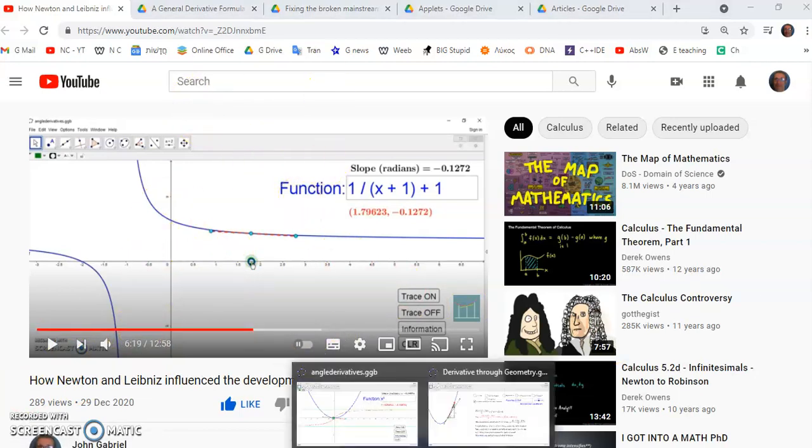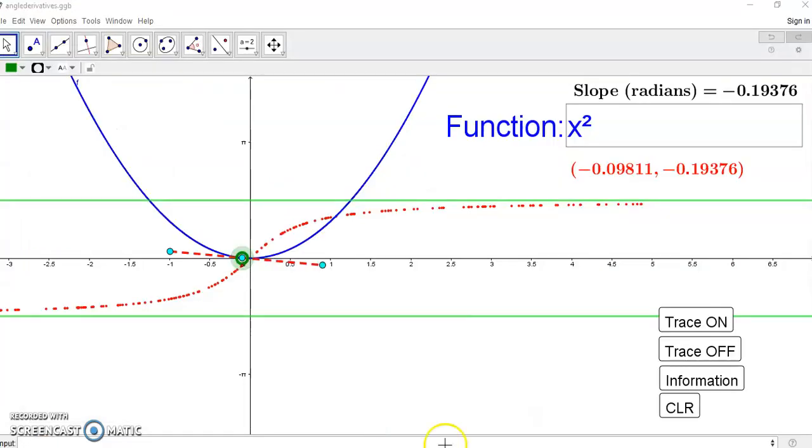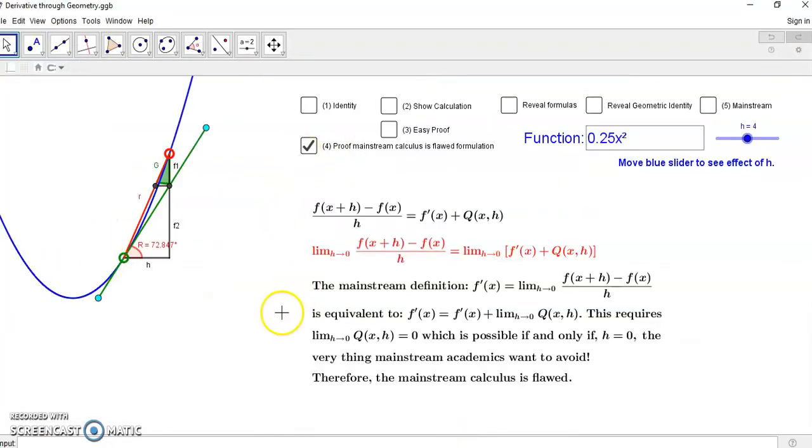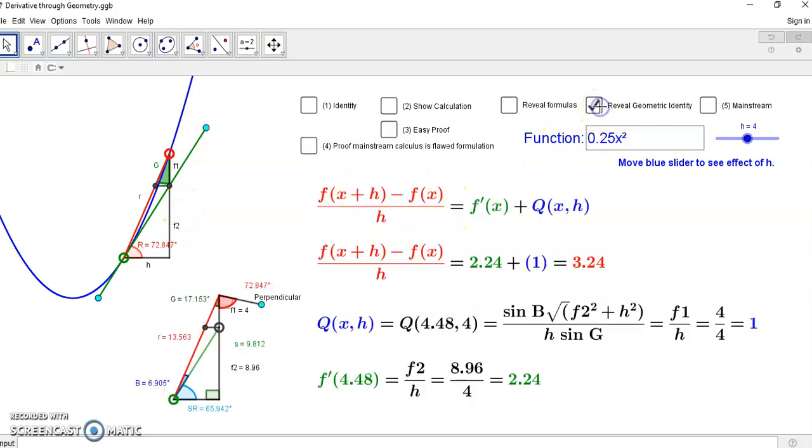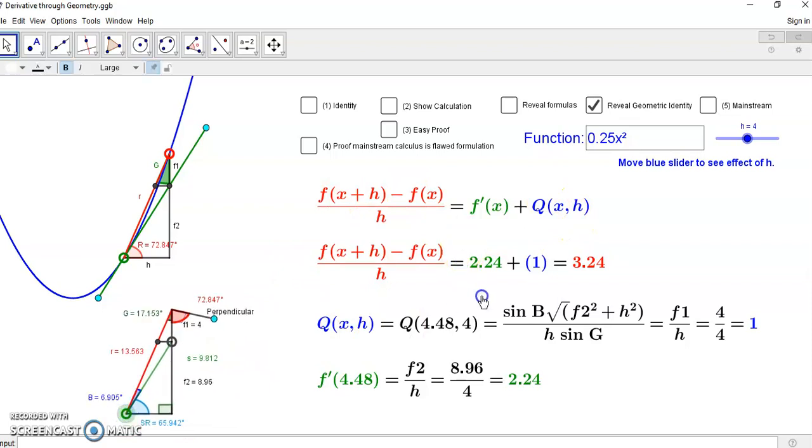Now the problem with the mainstream definition, here's the problem. This identity that you see here is a true identity. It comes from my historic geometric identity. This identity here.